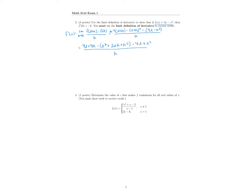We need to keep the limit notation following through since we'll be evaluating the limit, and we need to get h out of the denominator first. The 4x terms cancel out. Distributing the negative, we get 4h minus x squared minus 2xh minus h squared, minus 4x plus x squared. The x squared terms also cancel out. Everything on top has a common factor of h, so we pull out h to get h times 4 minus 2x minus h over h, and the h's cancel. We're left with the limit as h approaches 0 of 4 minus 2x minus h.